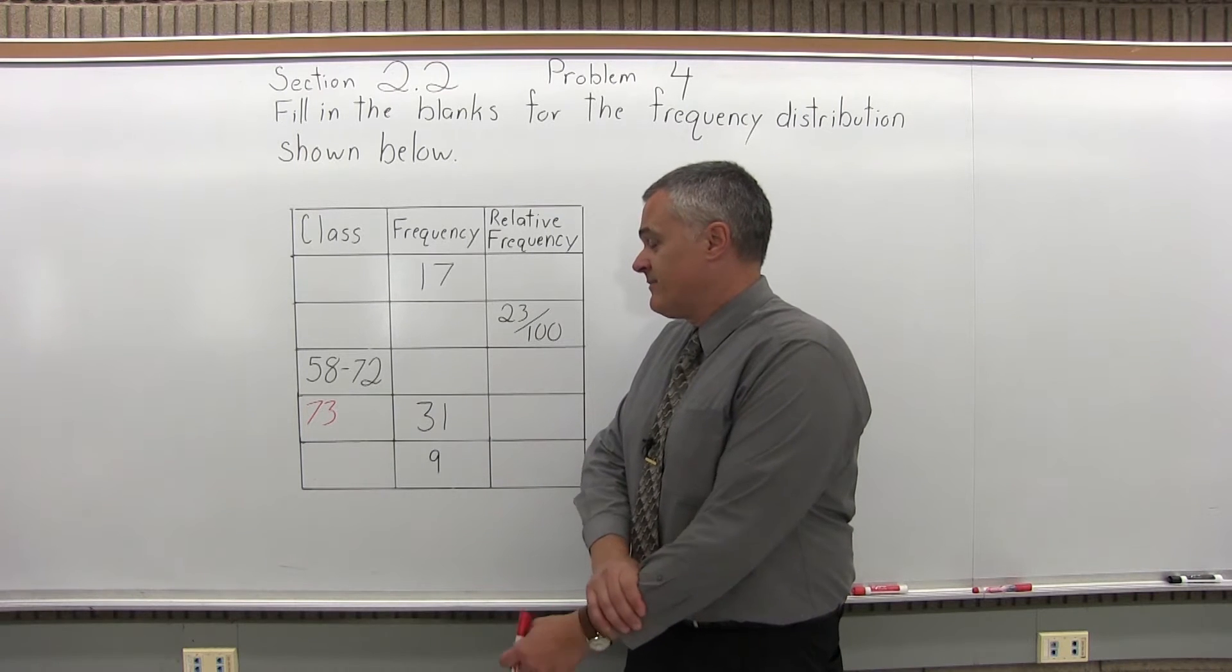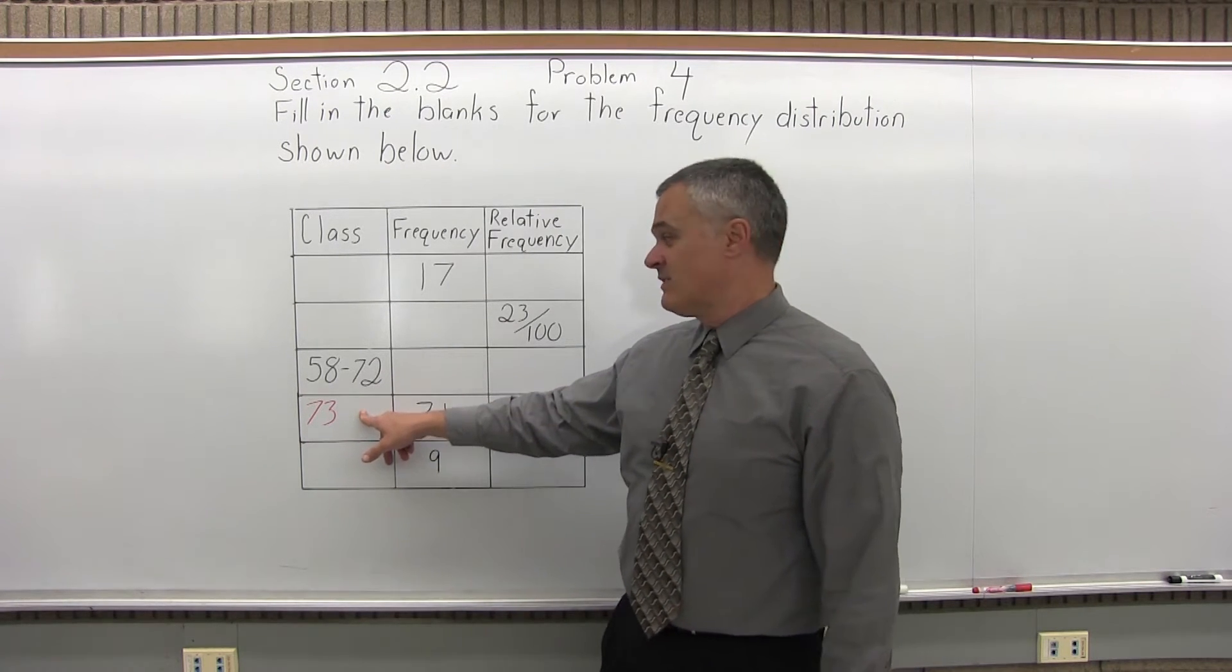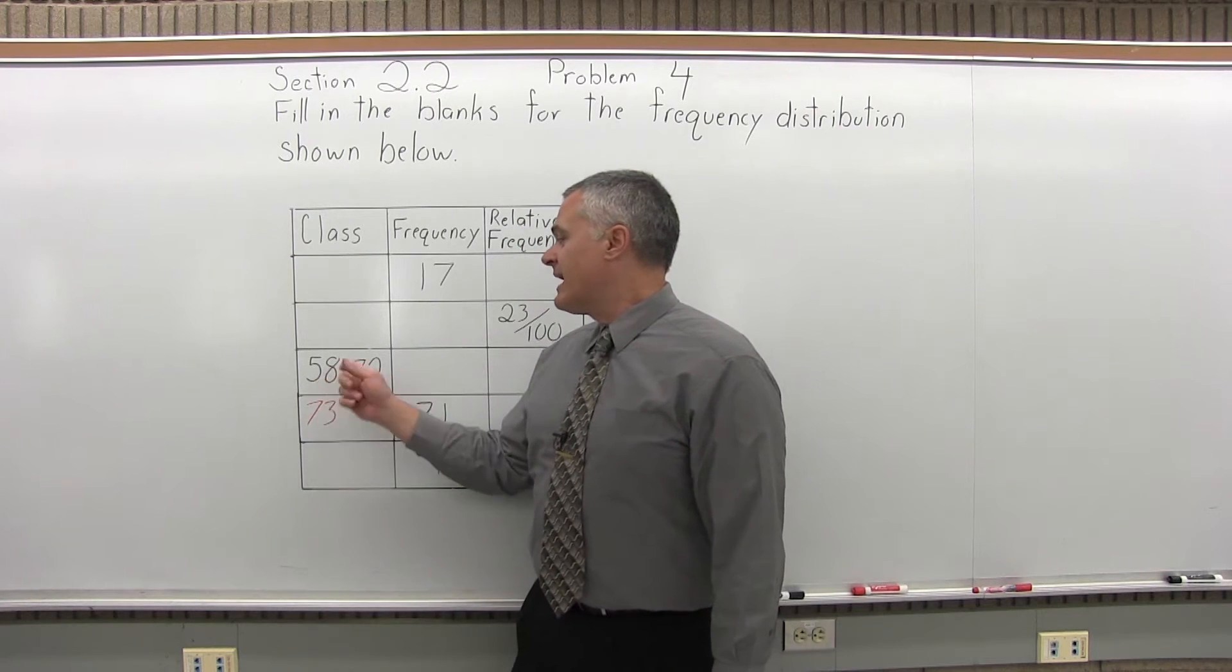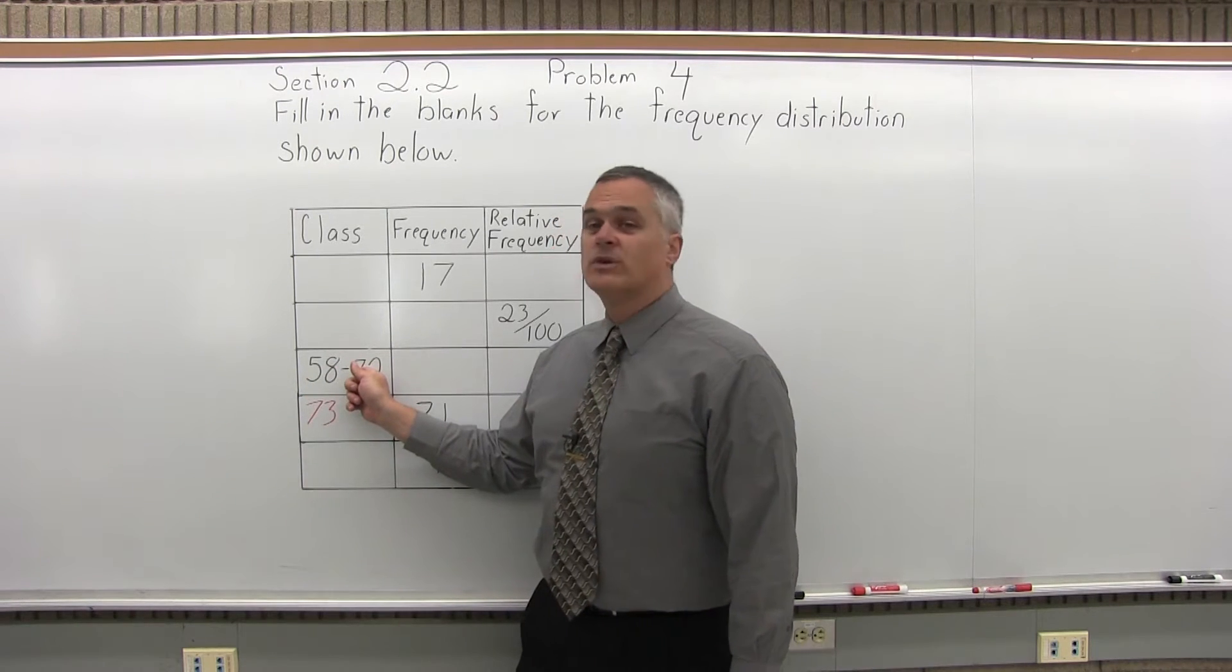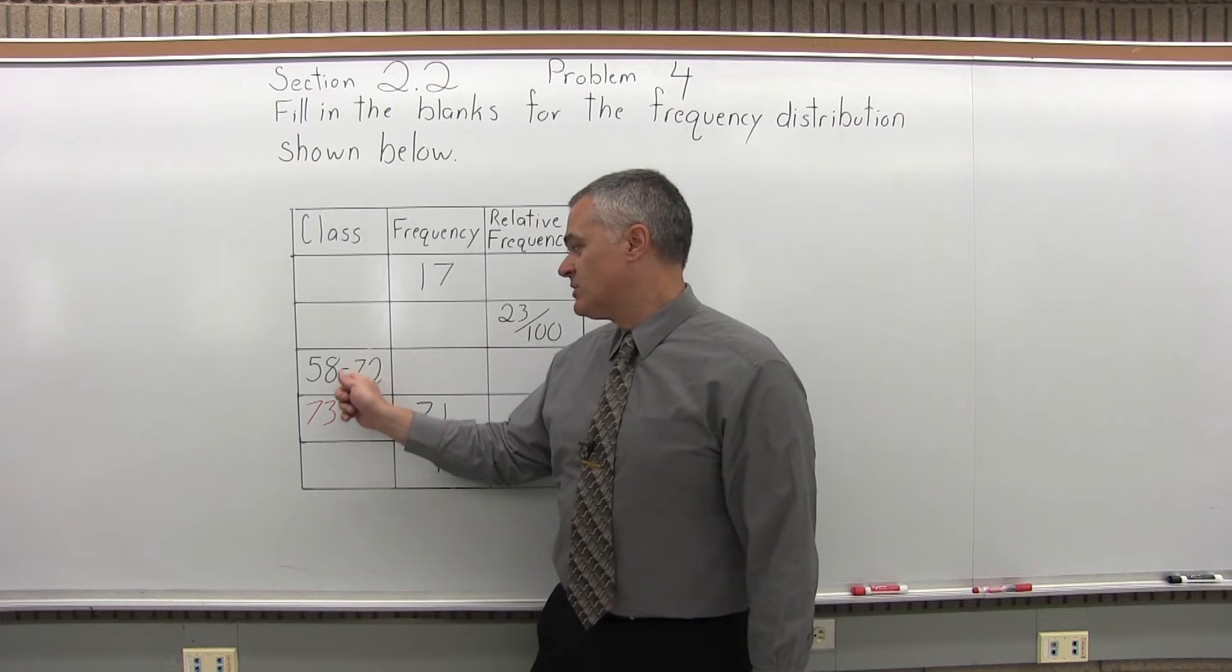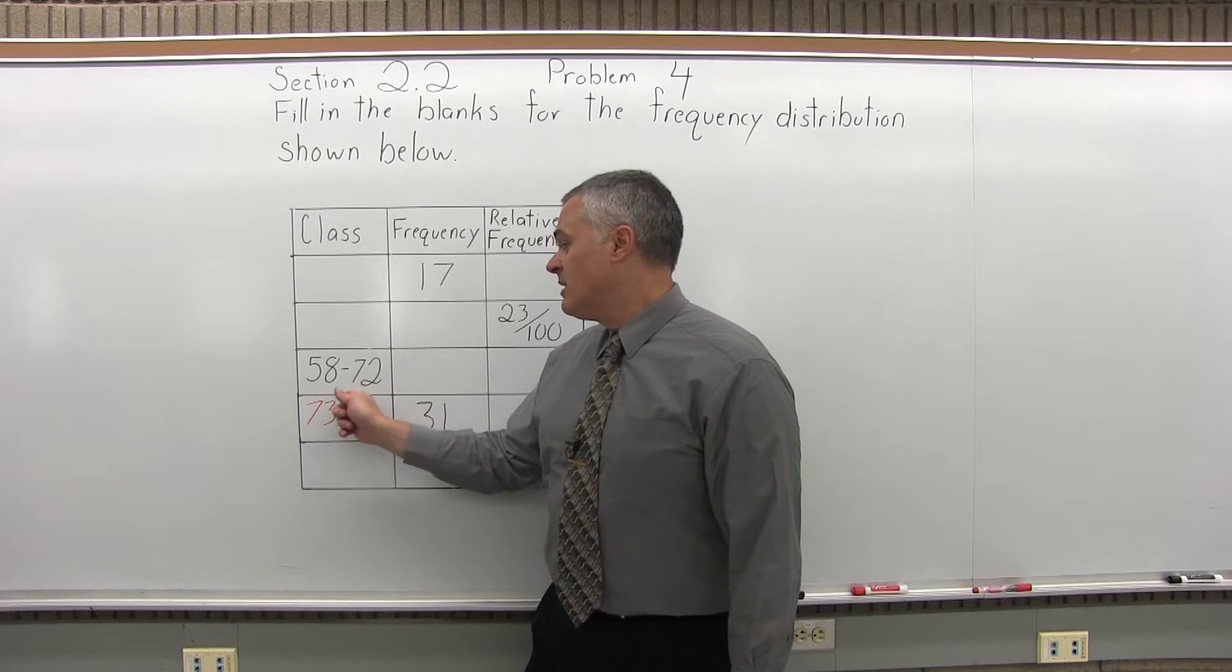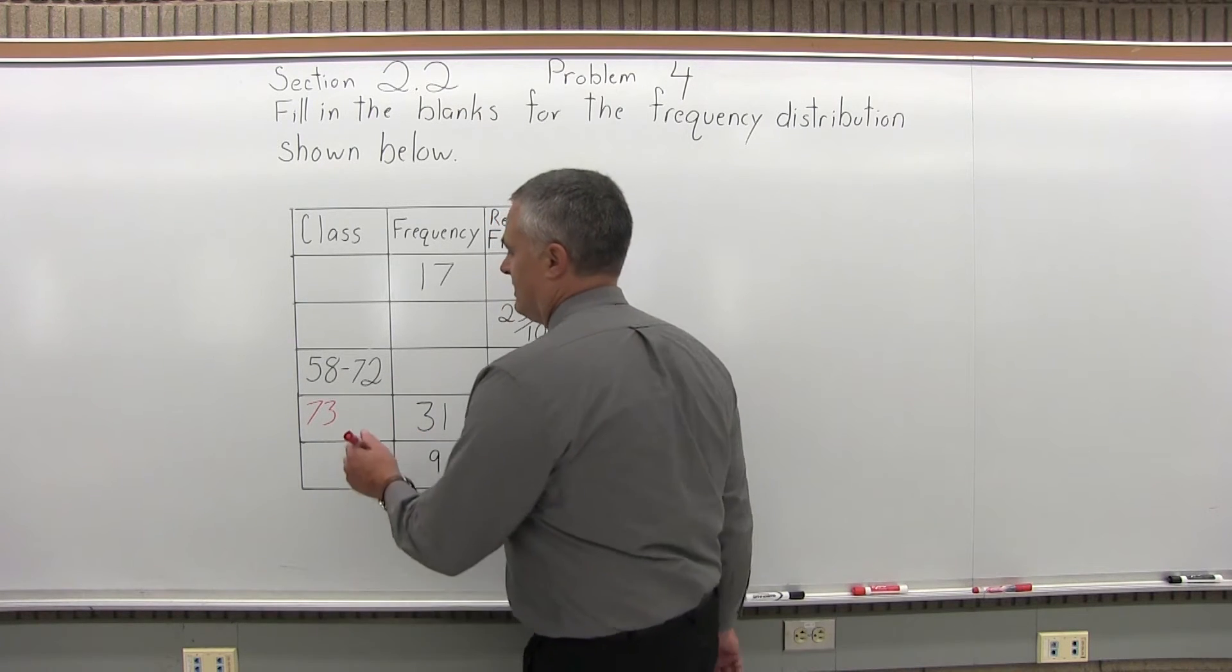Now that I know that, I can get the ending point for that class that begins at 73, the upper class limit. So the class before, what do I have to add to get from the lower limit to the upper limit? 58 and 14 is 72. So the class that I'm working on underneath it that starts at 73 must end at 73 plus 14, which would be 87.